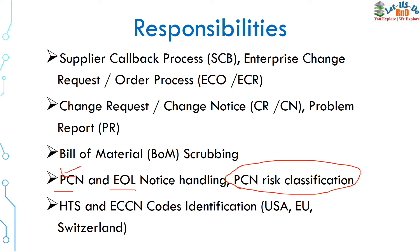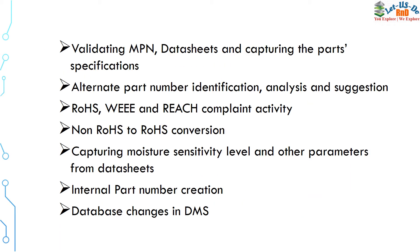PCN risk classification covers what type of risk any PCN poses on the availability of a component. As discussed earlier, the component engineer's role is to ensure component availability. HTS codes and season codes are required when any company imports products from other countries — USA has their own codes, Sweden has their own codes, Switzerland has their own codes.